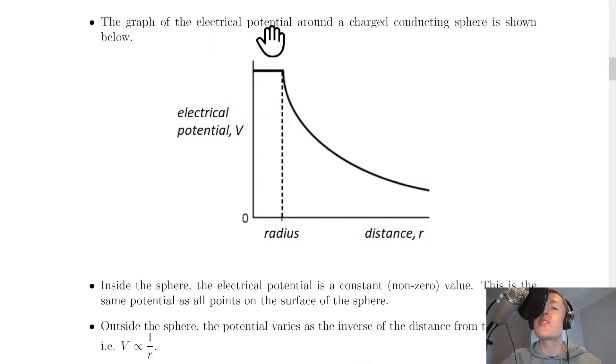Next, we have a graph of the electrical potential around a charge conducting sphere. So we have electrical potential V on the y-axis against distance R away from the charge conducting sphere on the x-axis. And you'll notice that we have the radius at this point here. So you should be able to see that inside the sphere, we have this constant value of electrical potential V and it's non-zero. So it's this non-zero constant value of electrical potential inside the charge conducting sphere.